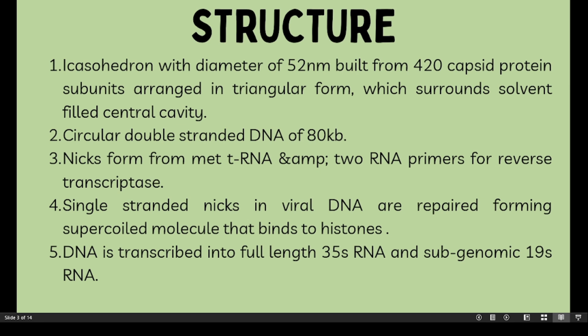The structure of the Caulimoviridae mosaic virus: the Cauliflower Mosaic Virus is an icosahedron with a diameter of 52 nanometers, built from 420 capsid protein subunits arranged with a triangulation number T equal to 7, which surrounds a solvent-filled central cavity.